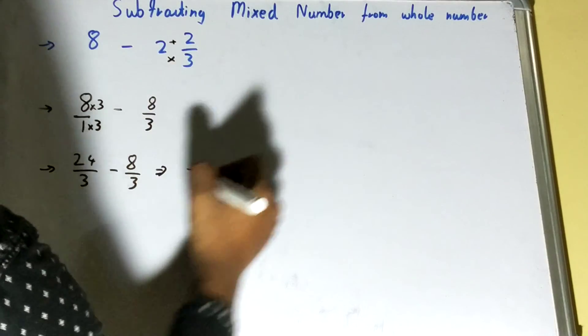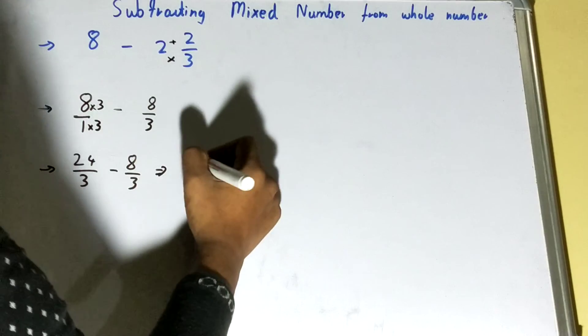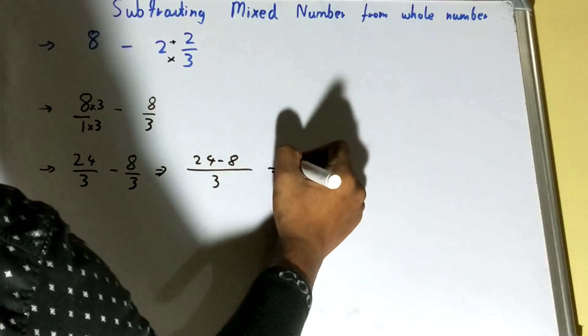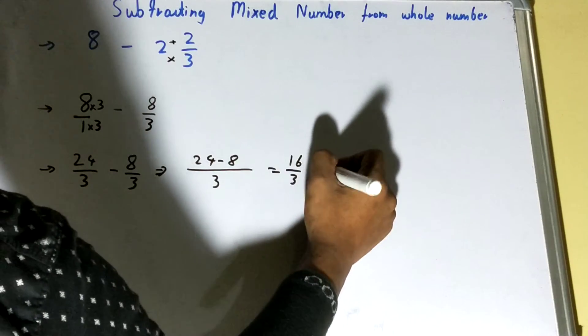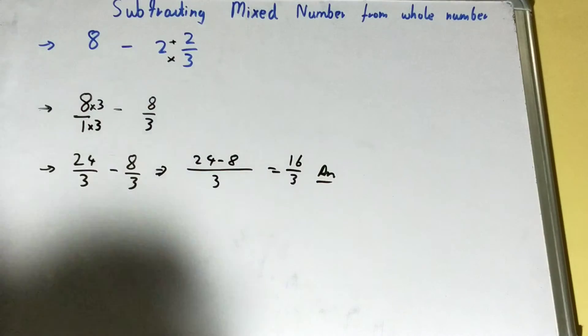So it will be 24 minus 8 - it looks quite easy - it will be 16 upon 3, and that will be your answer.